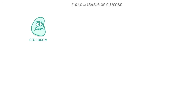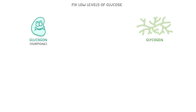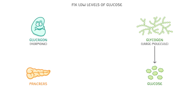So we now know how our body fixes high levels of glucose, but we also need to be able to fix low levels of glucose. And this is where glucagon comes in. Don't get glucagon confused with glycogen — glucagon is a hormone, whereas glycogen is a large molecule made up of lots of glucose molecules. Just like insulin, glucagon is also released from the pancreas, but it actually does the opposite of insulin, which is to say that it increases blood glucose rather than decreases it.